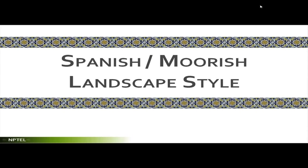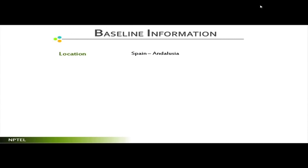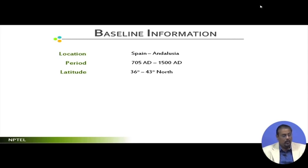Now for Spanish or Moorish — in literature you might find some confusion, with some referring to it as Spanish and others as Moorish. Take it for granted that it is the same landscape style. The baseline information: the location is Spain and Andalucia, where the entire Moorish landscape developed. The period is 705 AD to 1500 AD. The latitude is 36° to 43° North and the longitude is 4° East to 9° West.